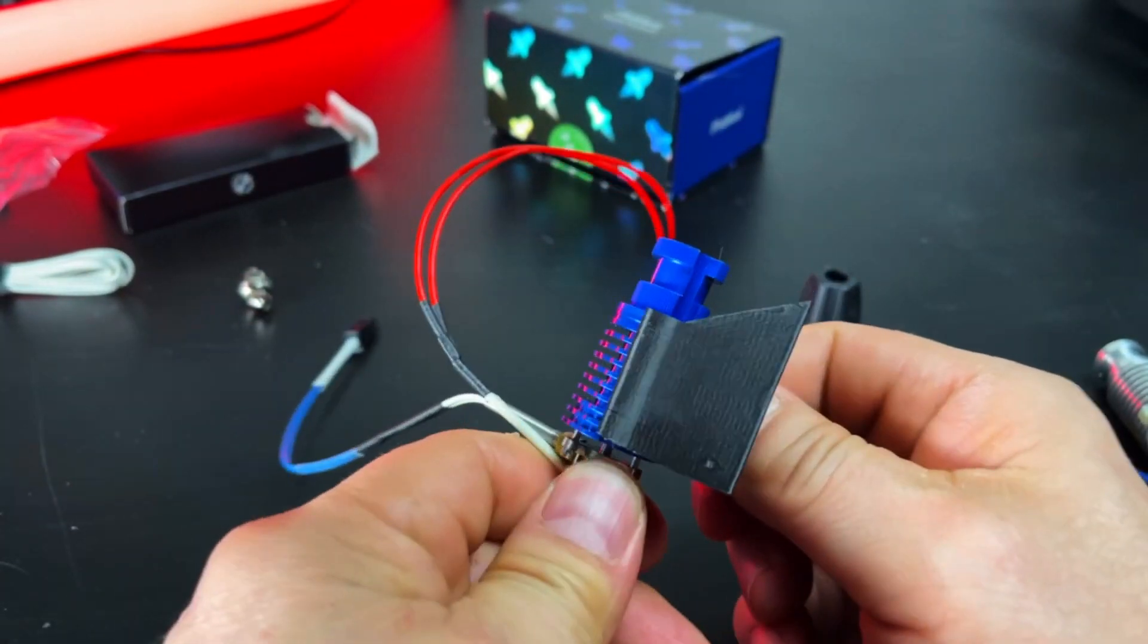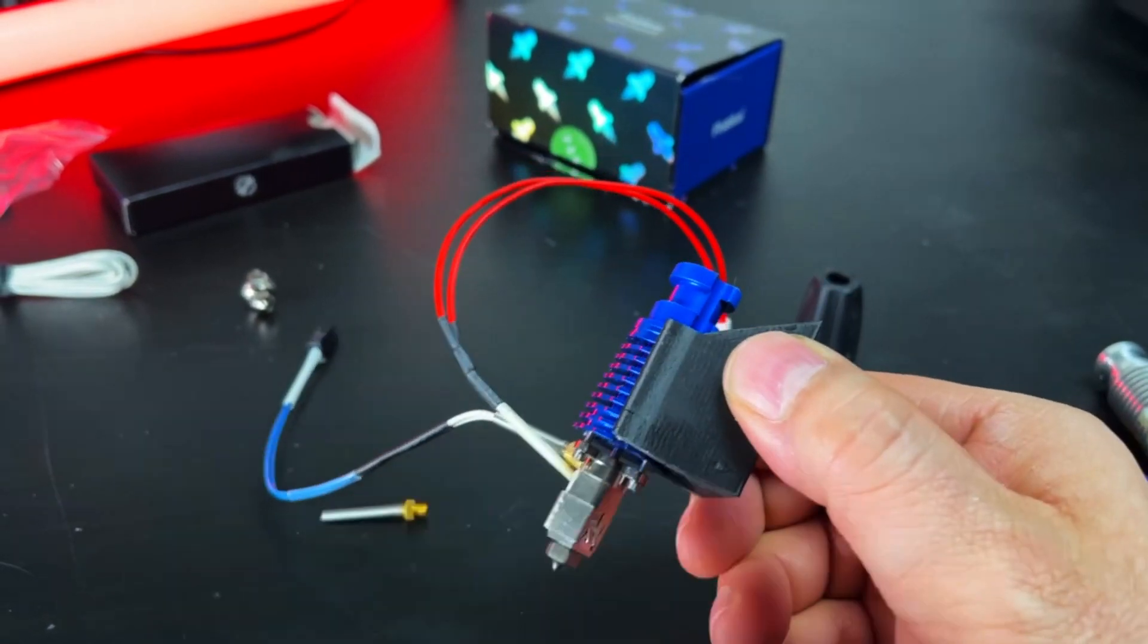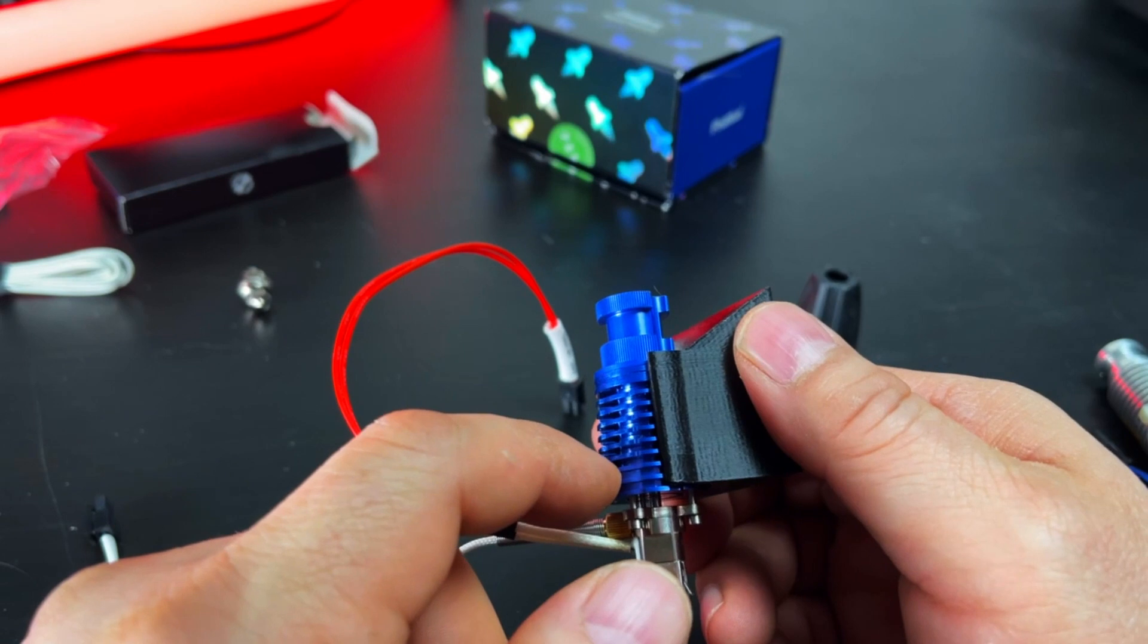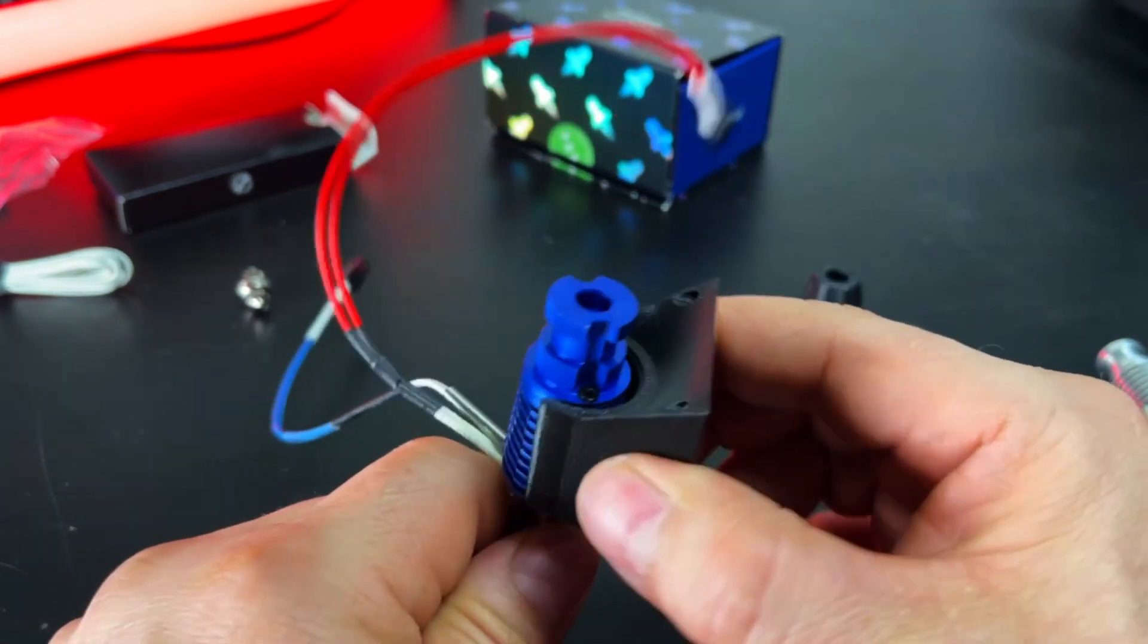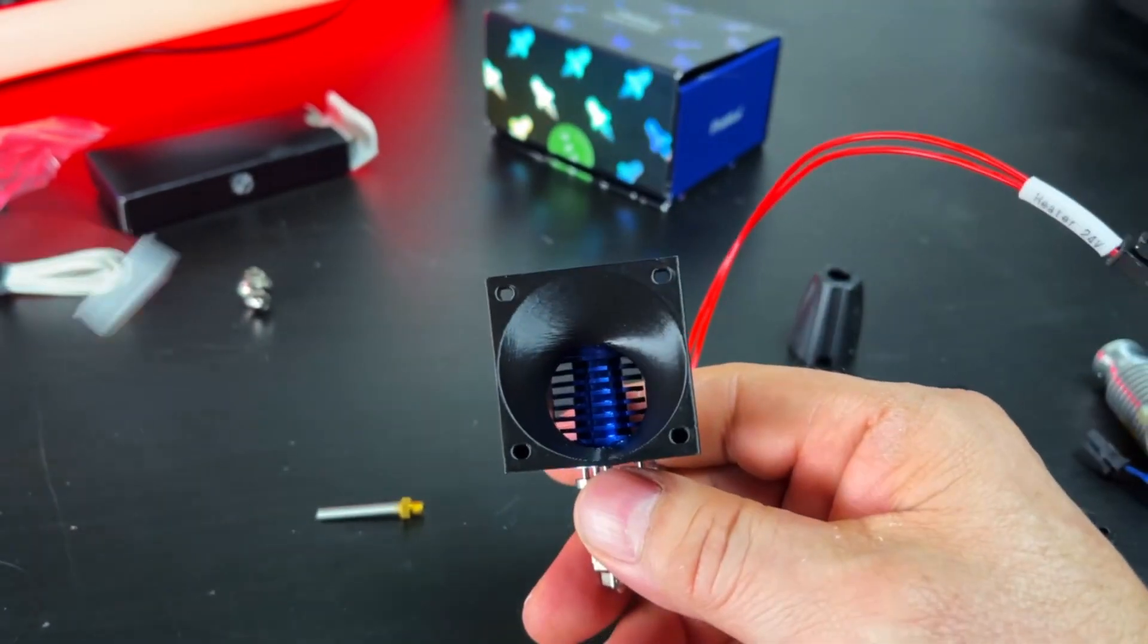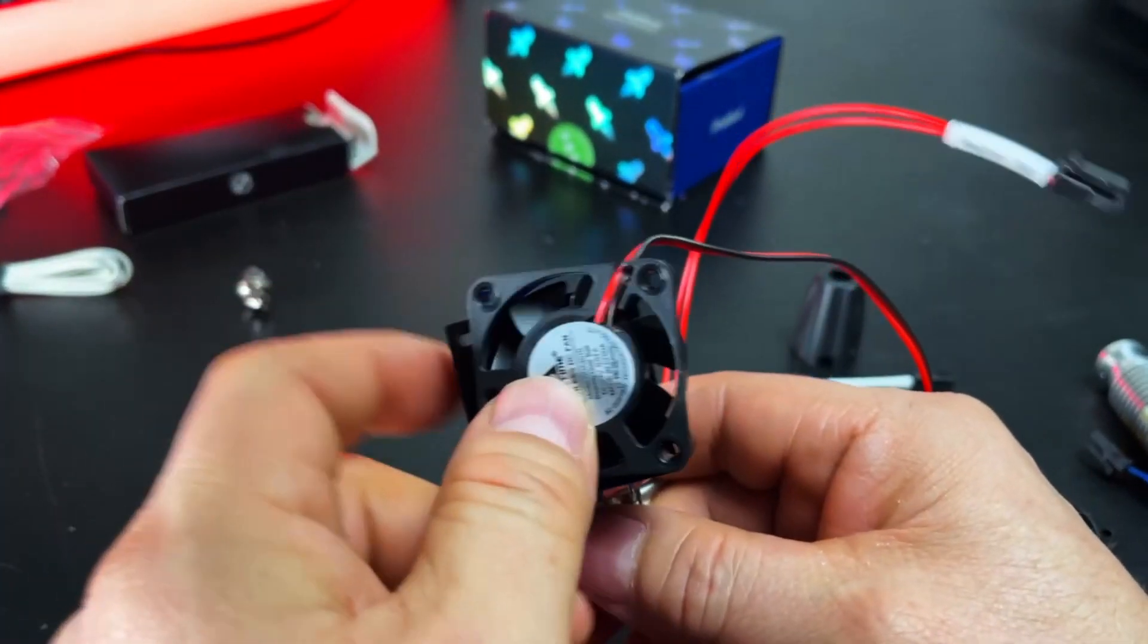This one snaps like that, and it is a good, tight fit. Covers all the fins on the aluminum part here, super tight, nothing loose about it, and it fits a 40 millimeter fan, like so.